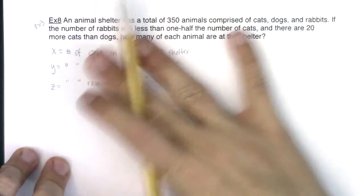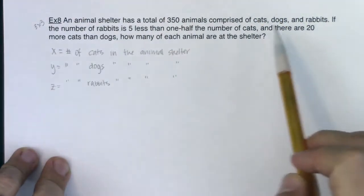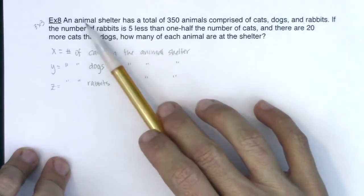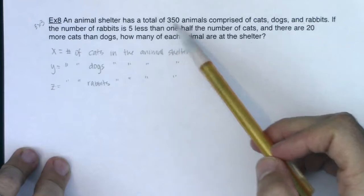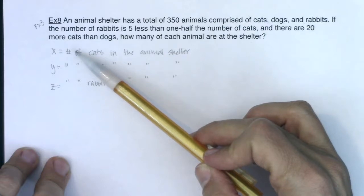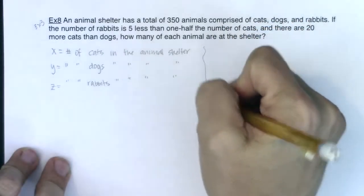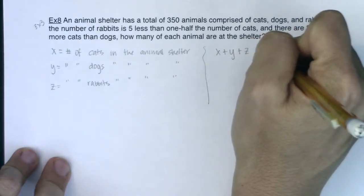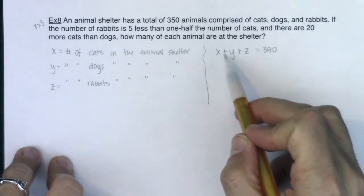I have three variables, so there has to be three equations floating through here. I can see a 350, a 5, and a 20. The animal shelter has a total of 350 animals, which is the combination of the number of cats, dogs, and rabbits. So my first equation is x plus y plus z equals 350.